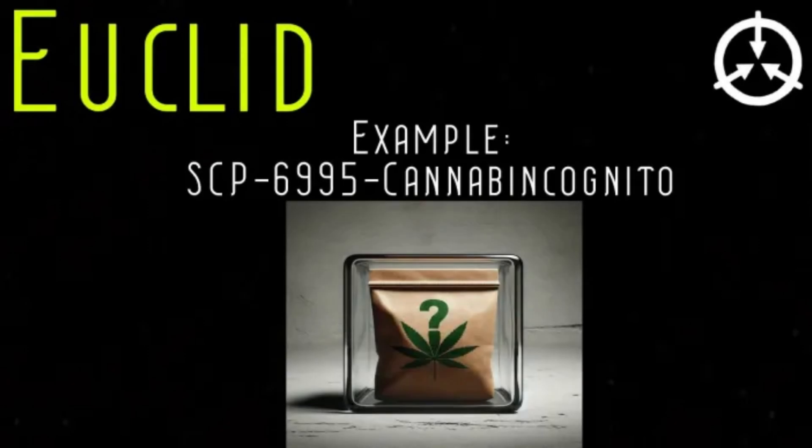Euclid class SCPs are anomalies that require more resources to contain completely, or where containment isn't always reliable. Usually this is because the SCP is insufficiently understood or inherently unpredictable. Euclid is the object class with the greatest scope and is usually a safe bet that an SCP will fall into that class if it doesn't fall into either Safe or Keter.